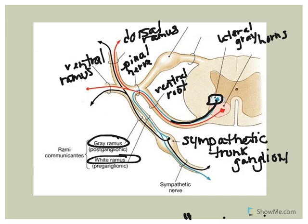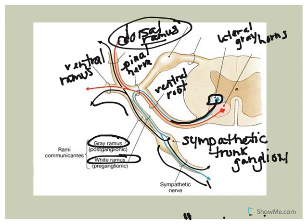For example, if a target structure such as a blood vessel or structures associated with skin in your back, it would travel along the dorsal ramus. If it was a visceral target associated with your limbs or your anterior lateral body wall, it would travel along the ventral ramus.